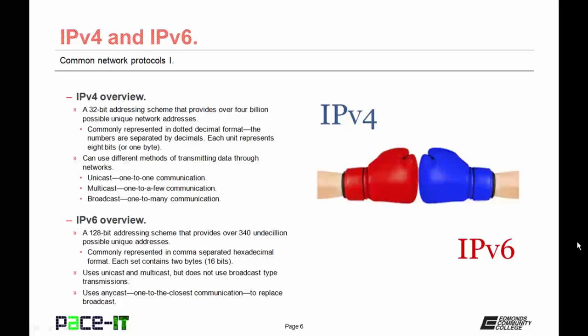IPv6, on the other hand, is a 128-bit addressing scheme that provides over 340 undecillion possible unique addresses — that is a lot of addresses. It's commonly represented in a colon-separated hexadecimal format, where each set contains 2 bytes, equal to 16 bits, and each set is separated by a colon. Like IPv4, IPv6 uses unicast and multicast transmissions, but it does not use broadcast. It does use anycast transmission, which is 1-to-the-closest communication, as one of its means of replacing broadcast.